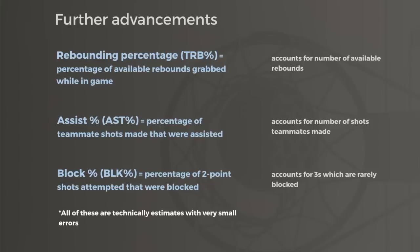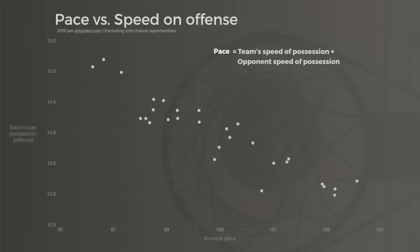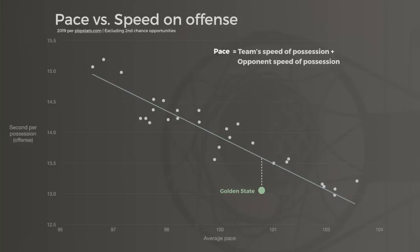These advancements added context to traditional stats, but they didn't always get us all the way to our answers. Take pace — we often want to diagnose whether a team is playing fast on offense, but pace includes the other team's offensive speed too. Over the course of the game this generally comes out in the wash, but opponents sometimes speed up to take advantage of slowness, or in the case of Golden State this year, slow themselves down against certain teams.